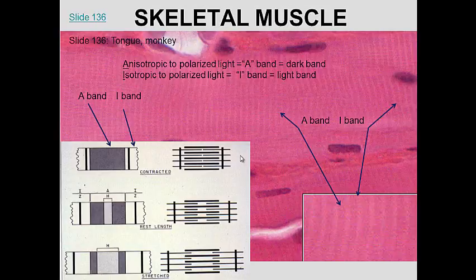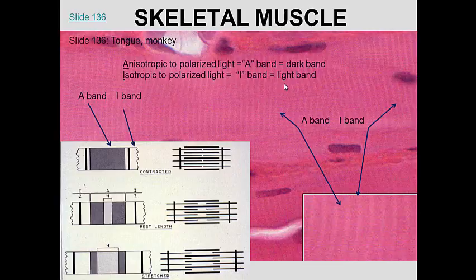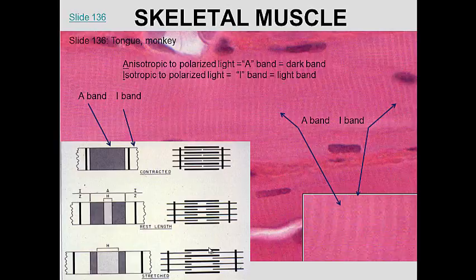Getting back to the light and dark banding: the dark band is the A band, which is anisotropic — it does alter polarized light. The I band is isotropic and does not alter polarized light; it is the lighter band. In between the I bands is the Z-disc, and from one Z-disc to another is one sarcomere. During contraction, the Z-discs come closer together. During relaxation or stretching, they are further apart. When fully contracted, the actin overlaps the myosin; in the relaxed state, there are spaces where you see either actin alone or myosin alone (the H band).